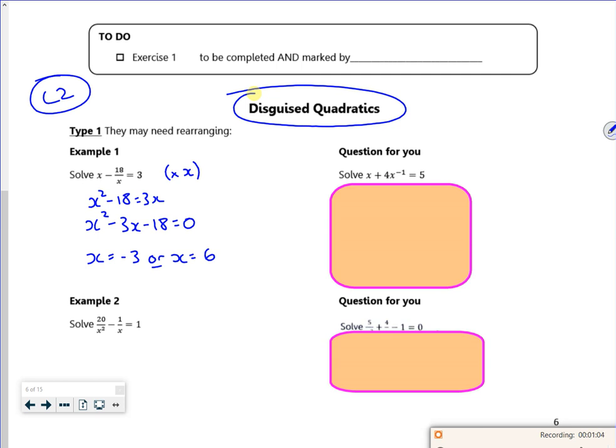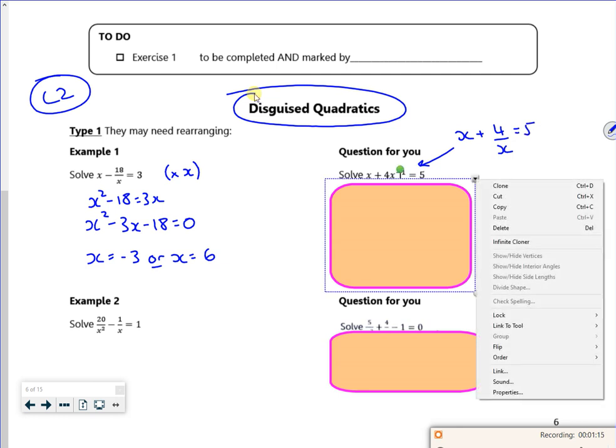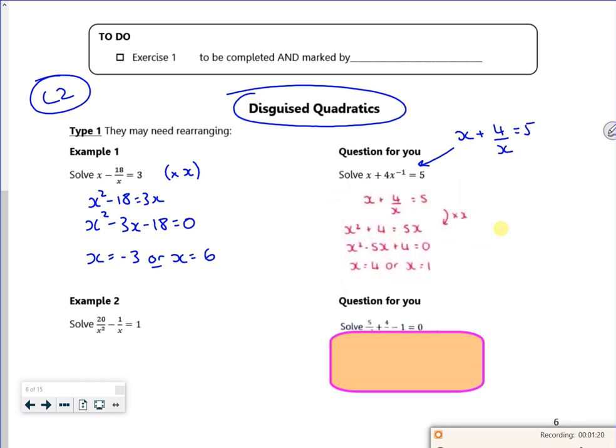There's one for you. Have you seen it being a bit sneaky here? Because it's like an x plus 4 over x is equal to 5. So we'll multiply 3 by x, so you'll do this one. Multiply 3 by x, rearrange it and solve it.